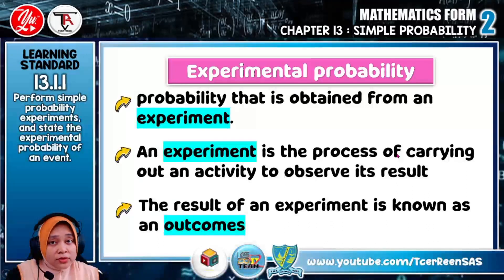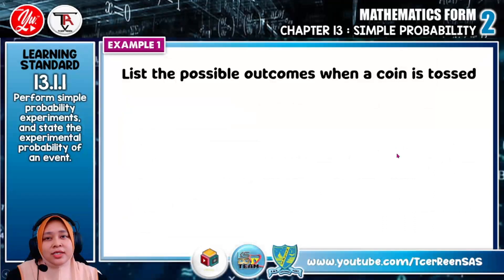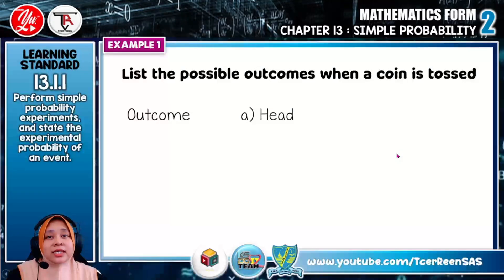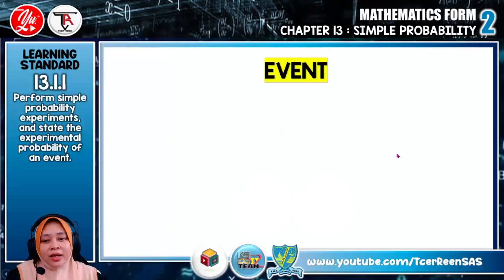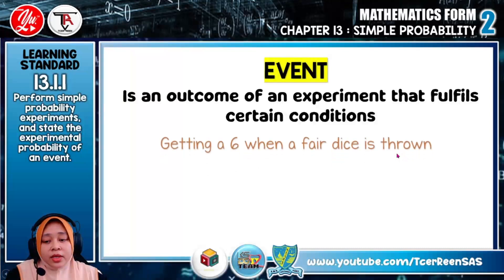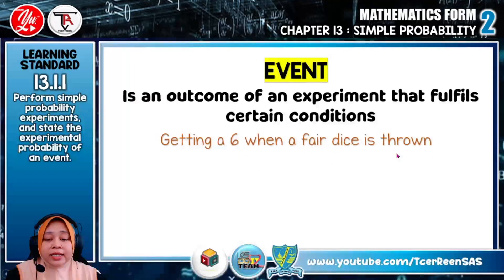The result of an experiment is known as outcome. Let's see example one: list the possible outcomes when a coin is tossed. For this experiment, the outcome is getting head and tail. What is an event? Event is an outcome of an experiment that fulfills certain conditions. For example, getting a six when a fair dice is thrown.